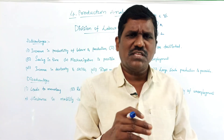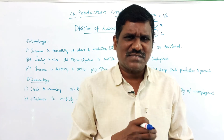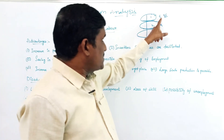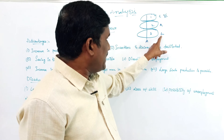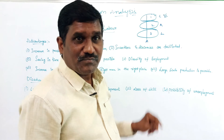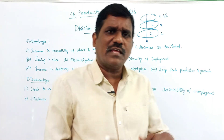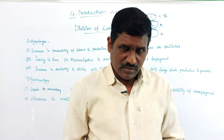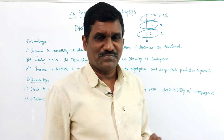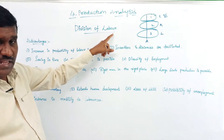Again and again, year by year, L can do only his third part — he cannot do the first or second part. He can do only his prescribed part repeatedly. So, what are the advantages of division of labor?